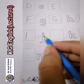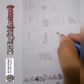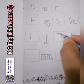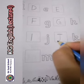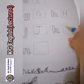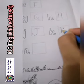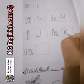The next one is small J. Capital K. The sound of K is 'k'.